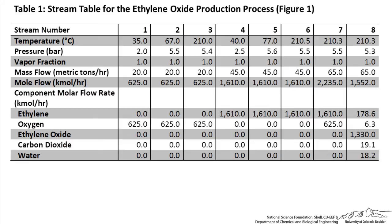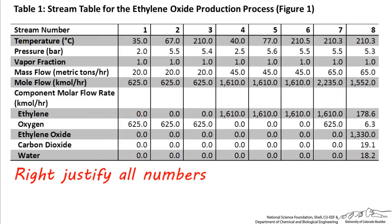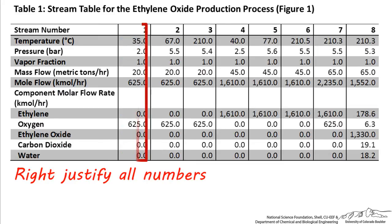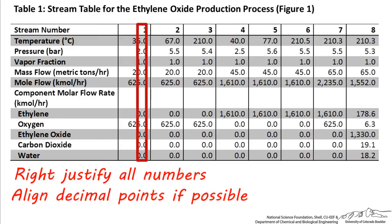Another tip for creating an easy-to-read table is to make sure you right-justify all numbers. This means that you should line up all numbers to the right side, which aligns all of the decimal points. Right-aligning these numbers makes them much easier to read than if they were centered or left-aligned. Also, if you can align all or most of your decimal points in each column, this can really help enhance the readability of the table.